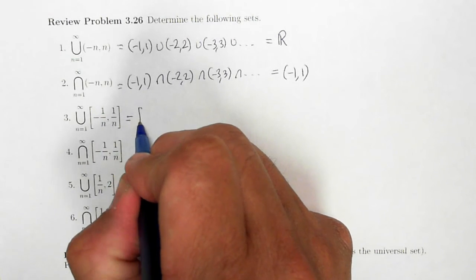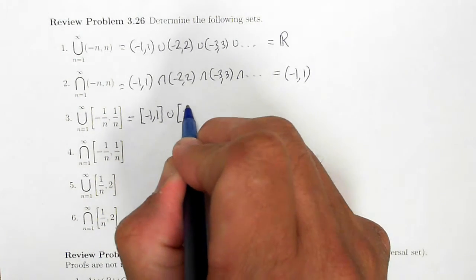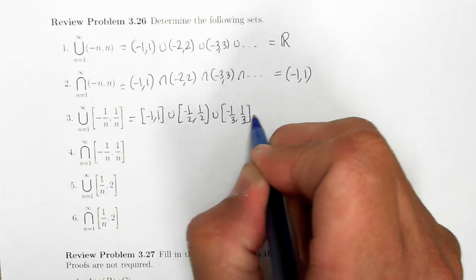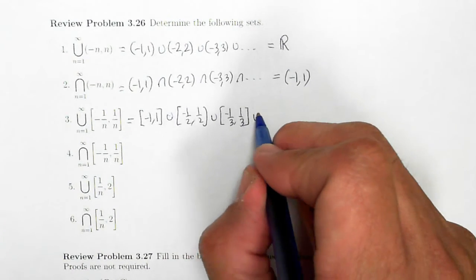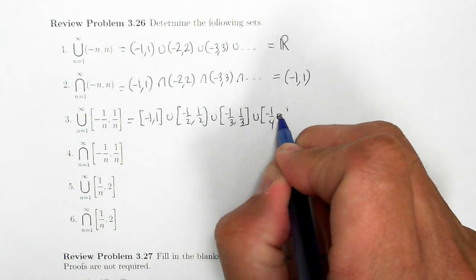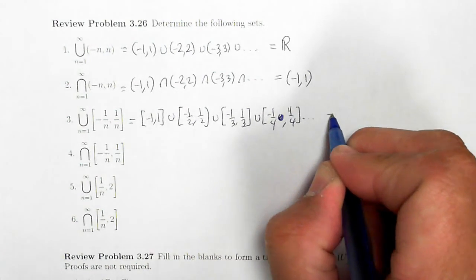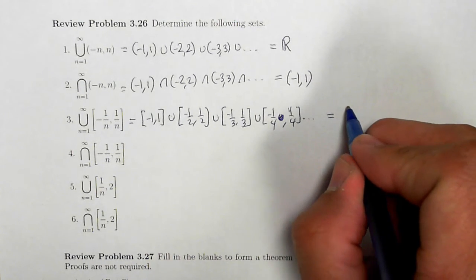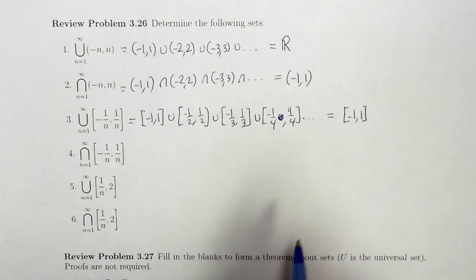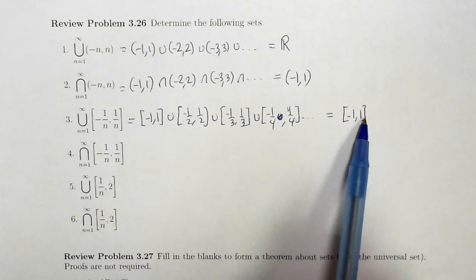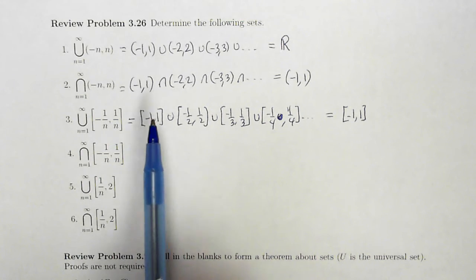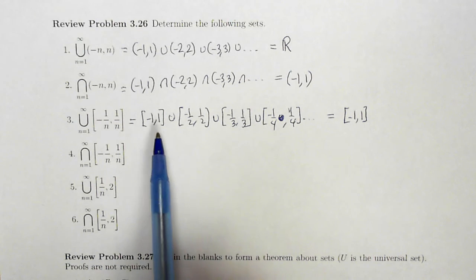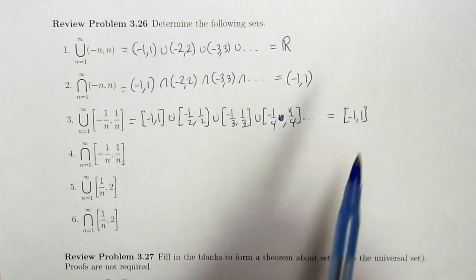Next, let's take a look at this infinite union: negative 1 to 1, union negative 1/2 to 1/2, union negative 1/3 to 1/3, union negative 1/4 to 1/4, and so on. Here the intervals are getting progressively smaller. So when I take the union, it's going to be the biggest one, which will be negative 1 to 1. If I take any number between negative 1 and 1, including the endpoints, it will be contained in at least one of these sets — namely the first one. If I take something outside this range, like 2, it will not be contained in any of these sets, so 2 cannot be part of the union.